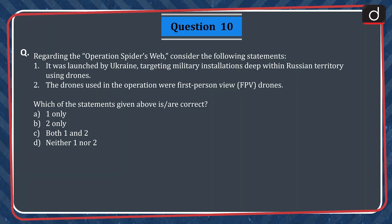Question 10. Regarding Operation Spider's Web, consider the following statements. 1. It was launched by Ukraine targeting military installations deep within Russian territory using drones. 2. The drones used in the operation were first-person view or FPV drones. Which of the statements given above is or are correct? A. One only. B. Two only. C. Both one and two. D. Neither one nor two.